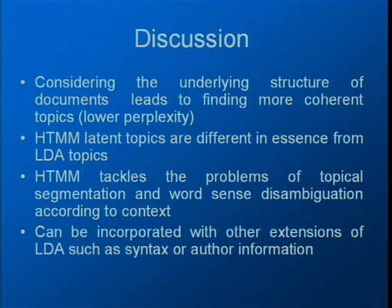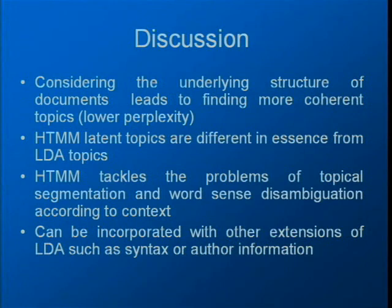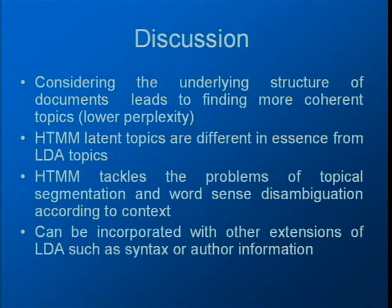Regarding computational complexity: the main additional cost is inference in a hidden Markov model. However, the transition matrix has a special form that depends on a linear number of parameters (linear in number of topics), not the general quadratic number. Therefore the forward-backward algorithm runs in linear time rather than quadratic time. The computational cost of considering the document structure is not high — you pay a small price and gain much more.